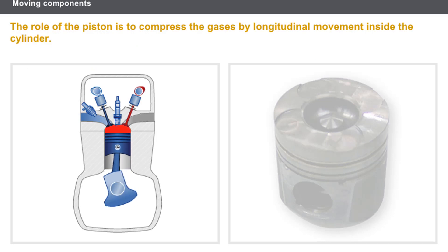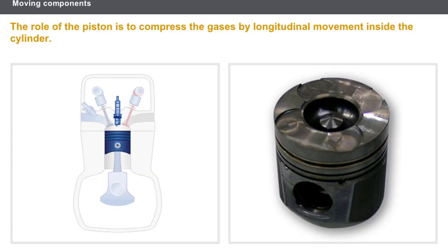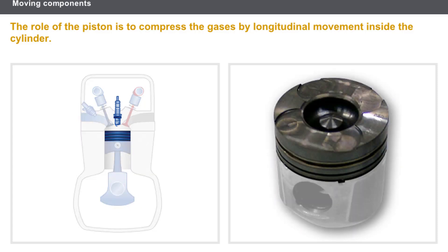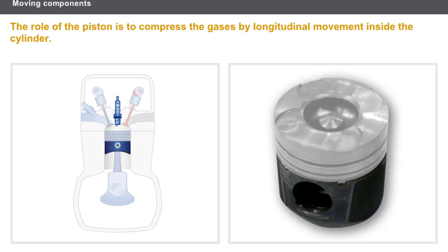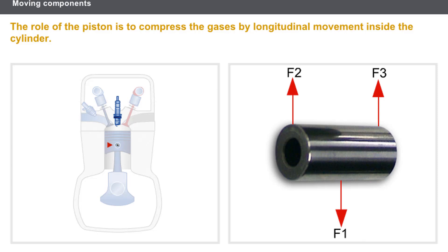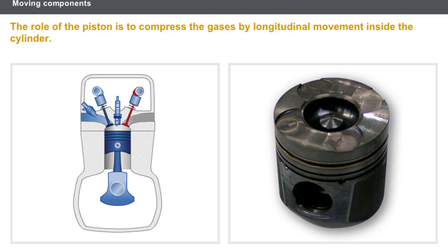The role of the piston is to compress the gases by longitudinal movement inside the cylinder. The piston is composed of: a cylindrical-shaped head with a diameter slightly less than the diameter of the cylinder, a skirt which guides it inside the cylinder, and a gudgeon pin which provides the link with the connecting rod. The piston is molded, sometimes in cast iron but usually of light alloy.